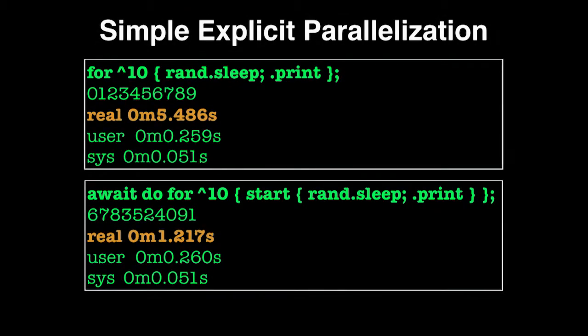Here's an example of making something run in parallel. rand-sleep is here just an amount of work. This runs about five-and-a-half seconds in Perl 6 like that. If you do it like this — again, like Jonathan showed — the await-do-for-start trick — it actually runs much faster and doesn't use much more CPU. So if you need to parallelize something, this is a very easy way to do that in Perl 6.